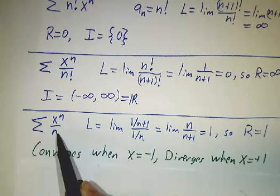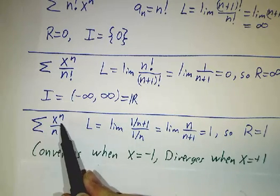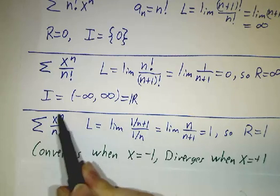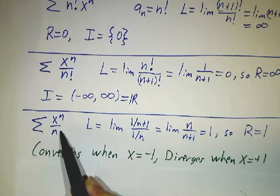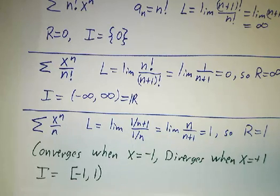We look at what happens in the boundary when x is minus 1. This converges, it's an alternating series. When x is plus 1, it diverges. So that means that the interval of convergence is from minus 1 to 1, including minus 1, but not including 1.